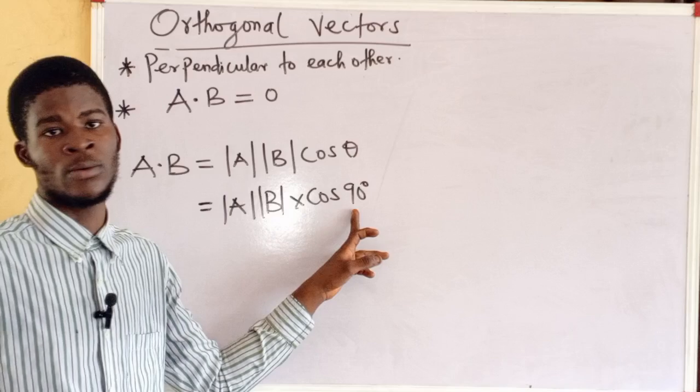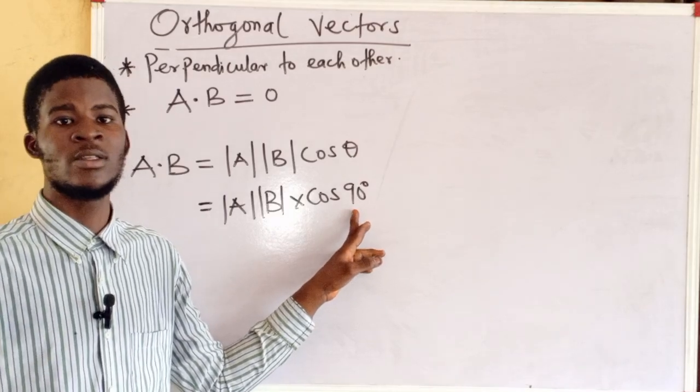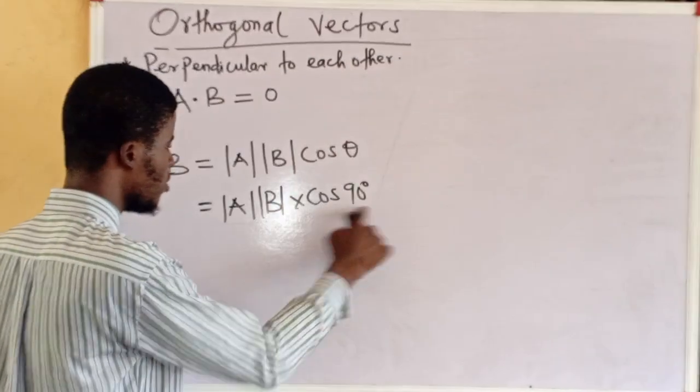So, cos 90 degrees is zero. Yes, cos 90 is zero. So, everything here is equal to zero.